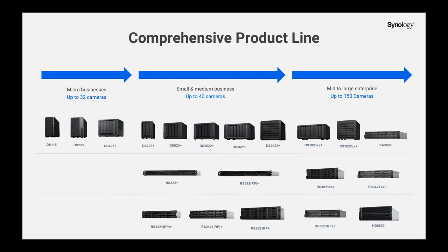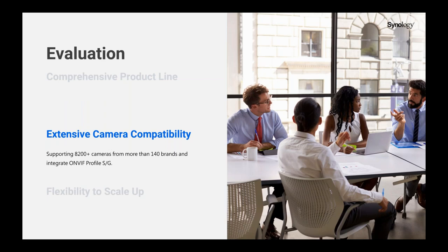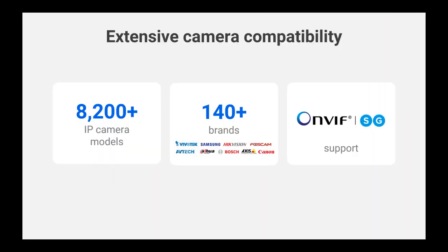Apart from the diverse choice of surveillance servers, Synology also puts a lot of effort into camera compatibility. We are constantly working to maximize compatibility, allowing businesses to choose from different cameras that accommodate their requirements and budget. As of the present moment, Surveillance Station supports over 8,200 cameras from 140 well-known brands, and integrates ONVIF Profile S for streaming and Profile G for edge storage. This allows users to flexibly design their surveillance infrastructure. Even for those with an existing system, integration can be done effortlessly.